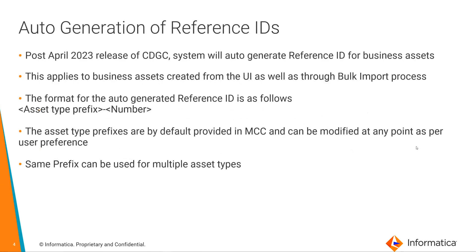Post the April 2023 release of CDGC, the system will now auto generate reference IDs for business assets. This applies to business assets created from both the UI as well as through the bulk import process. The format for the auto generated reference ID would be the asset type prefix, followed by a hyphen, and an auto generated number. The asset type prefixes are provided by default in MCC and can be modified at any point in time. Also, for multiple asset types, the same prefix can also be used.